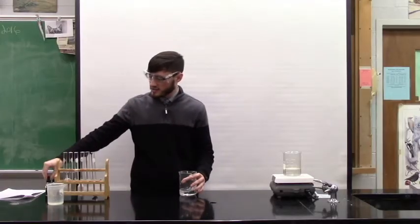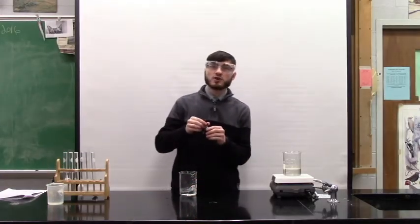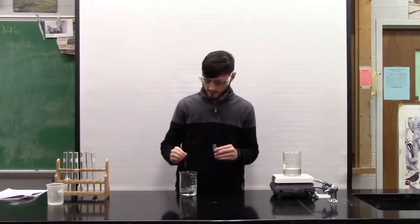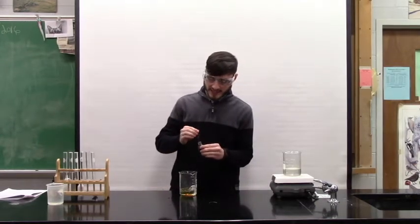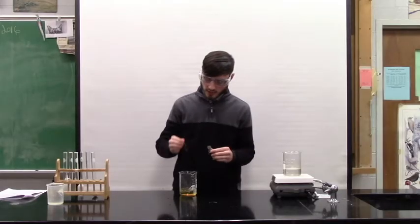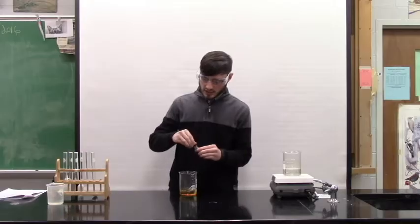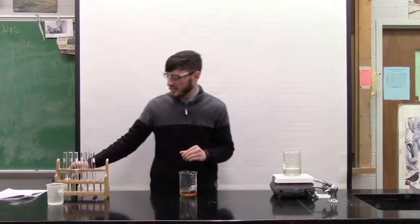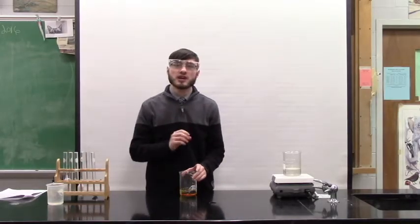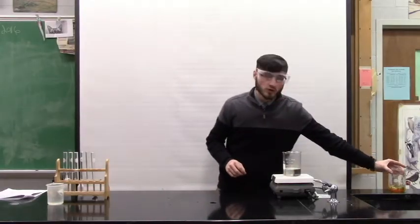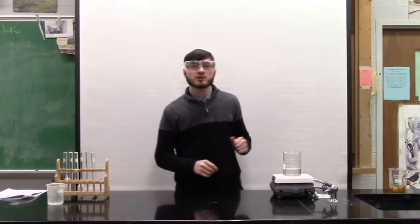Then you're going to add iodine or starch indicator solution to it. Now it's a brownish color. We like to call it amber. But when it comes in contact with the starch, it turns black. So that's an indicator to let us know that starch is there. If it turns black, we know there's starch. Now you let that sit for a little bit to see if any diffusion occurs.